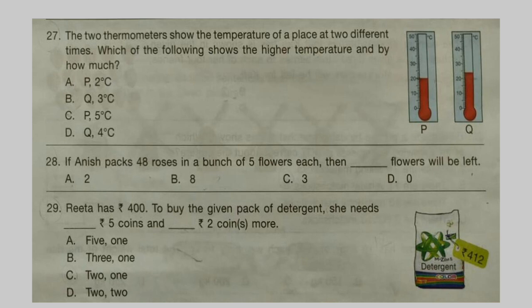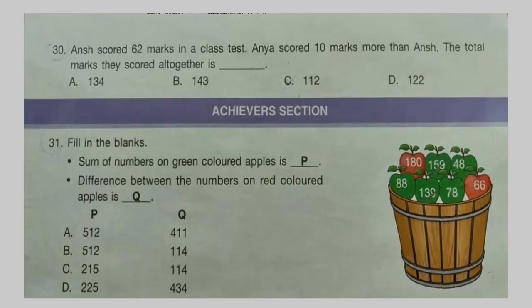Question 29: Rita has Rs. 400. To buy the given pack of detergent, she needs dash Rs. 5 coins and dash Rs. 2 coins more. Question 30: Ansh scored 62 marks in a class test. Another student scored 10 marks more than Ansh. The total marks they scored together is dash.